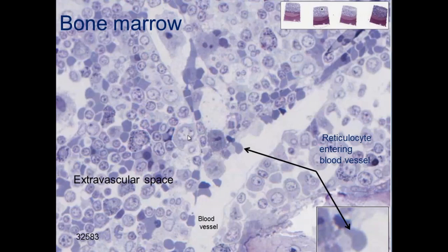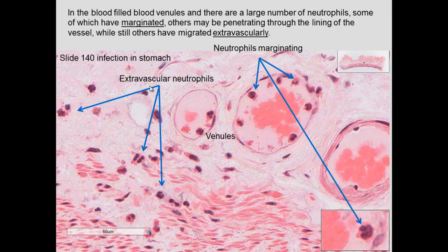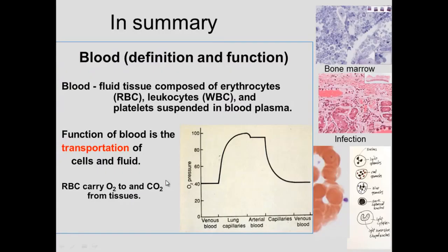This occurs in bone marrow where we can see some granules. This is the extravascular space outside a blood vessel, and this is the blood vessel right here. You can see where a reticulocyte is squeezing through from the extravascular space into the blood space to enter the circulation. Here we can also see where an infection has occurred and you have margination — where blood cells stick to the little venules and then migrate through. Here are some cells that are already extravascular, having come outside to do their job.